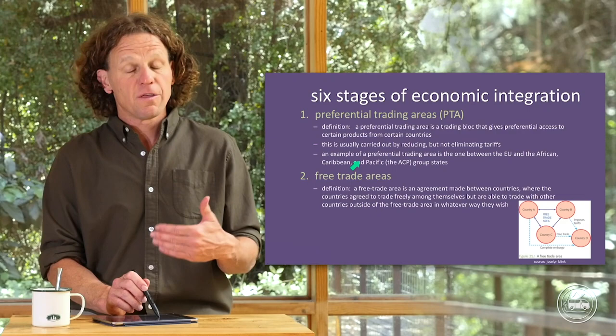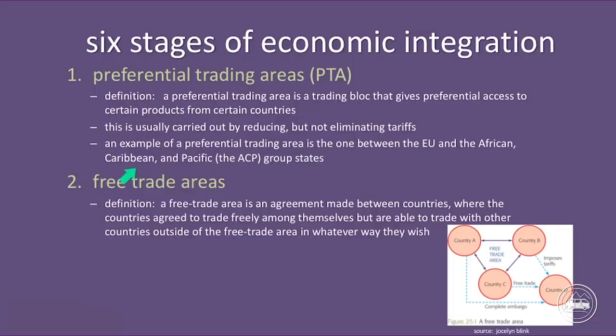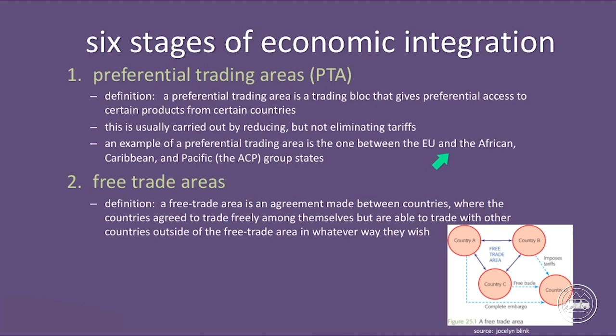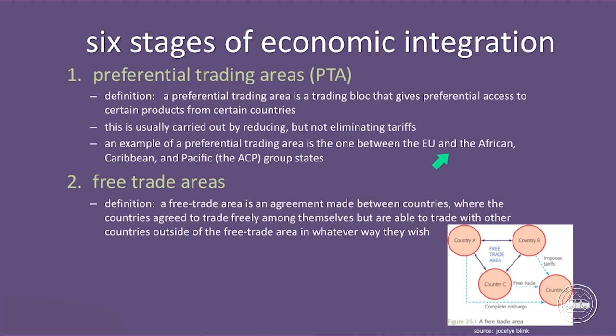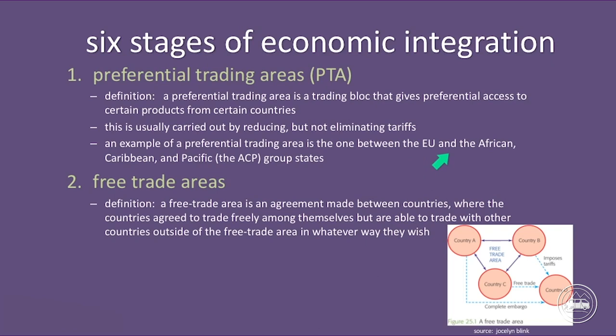An example — and it's really important in your studies to go beyond the examples I'm going to give here, as there are many — an example of a preferential trading area is that between the European Union and the African, Caribbean, and Pacific, or ACP, group states. Certain products have no tariffs, but it doesn't really go past that. So that's just the first stage of integration.